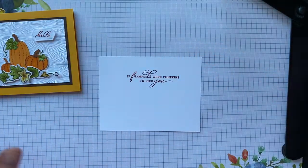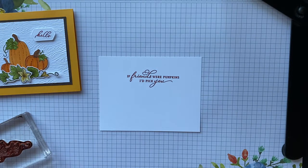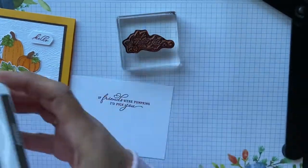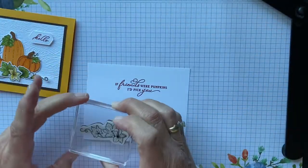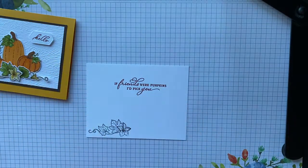And then we're going to take our other little stamp and we're going to ink it again in the Early Espresso, and we're going to just stamp that right here, just like that. And then you can color it.